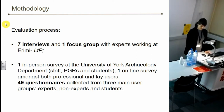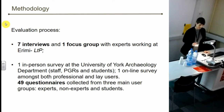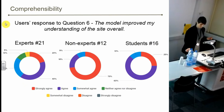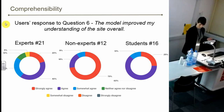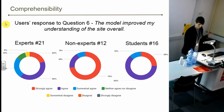To date, these results show interesting responses classified into four main categories: comprehensibility, immersivity, usability and engagement. In terms of comprehensibility, all groups show a general clear agreement on the help of the proposed model for a better overall understanding of the site. In particular, non-expert users — 73% strongly agree — and students — 63% agree. Expert users' response is also positive but more dispersed.